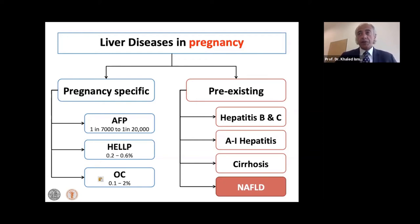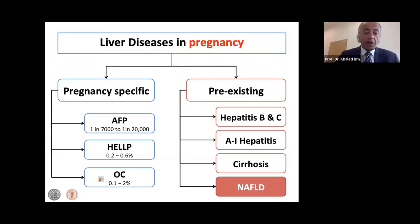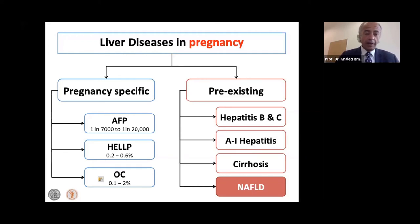The other pregnancy-specific condition is HELLP syndrome — hemolysis, elevated liver enzymes, and low platelets. This is something we certainly see a lot of in our professional life as obstetricians — it is a complication of preeclampsia. The prevalence of HELLP is somewhere between 0.2 and 0.6%, making it much more common than AFLP, and hence we see more of it.